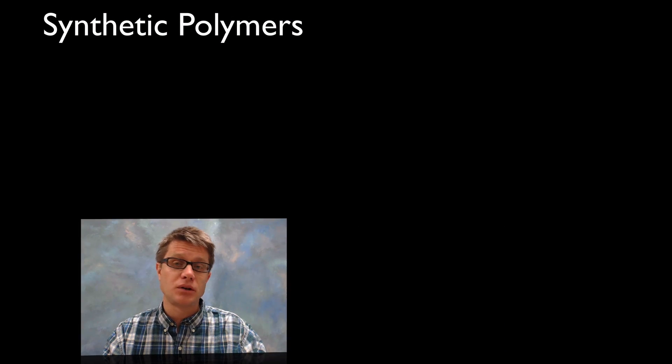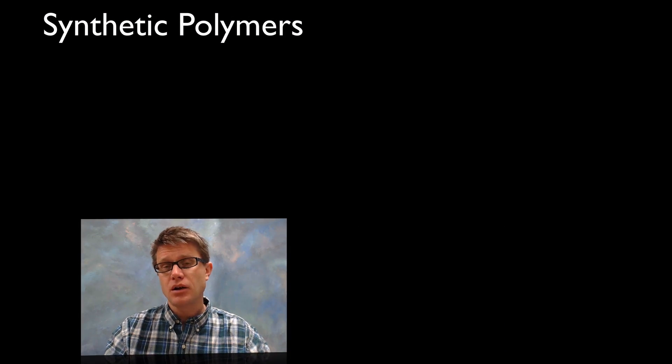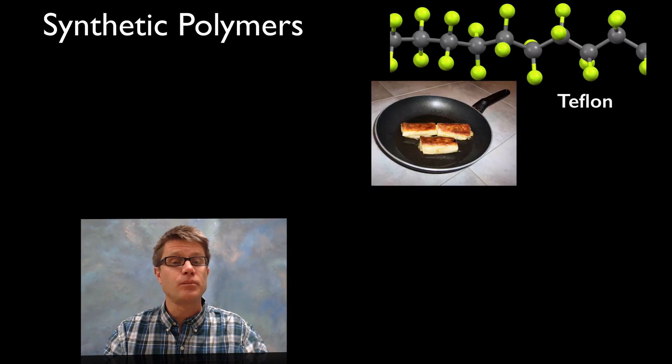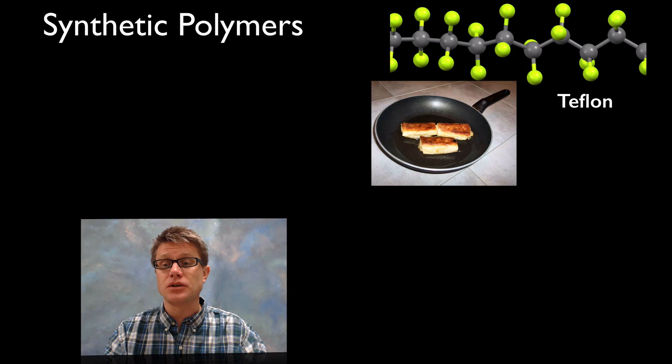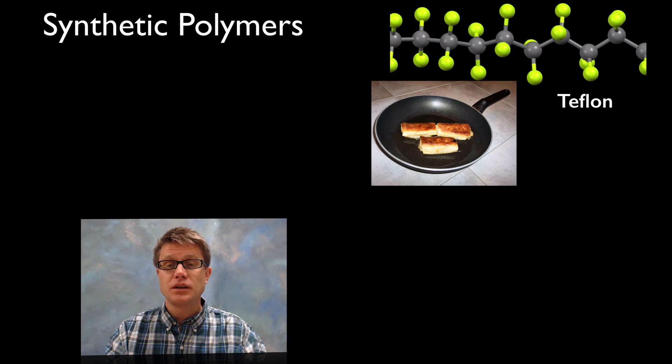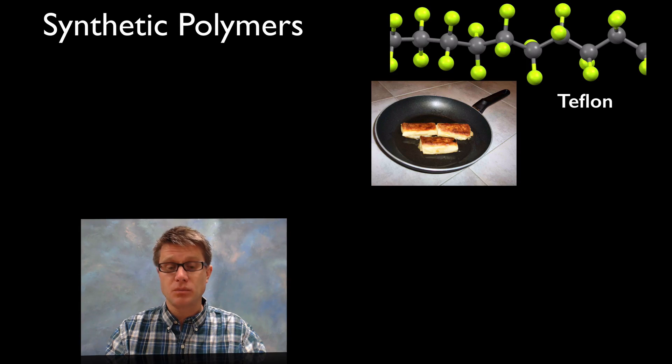Now as we start to create polymers of our own, if we understand how their structure fits their function, then we can start to design polymers that do wonderful jobs. So for example Teflon, the structure of Teflon which is going to be a polymer gives us its function which is going to be that nice non-stick pan.